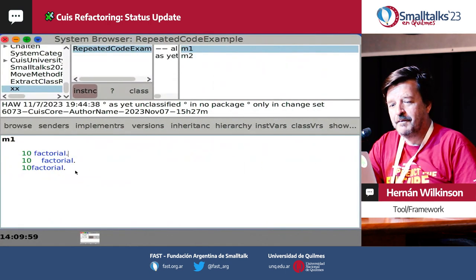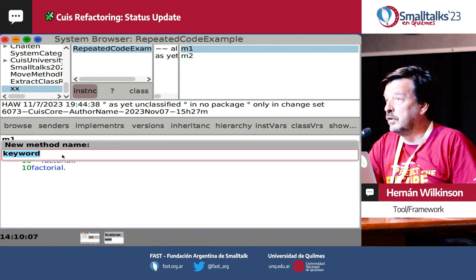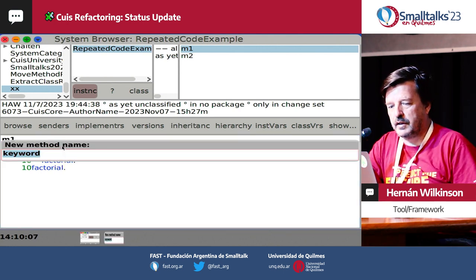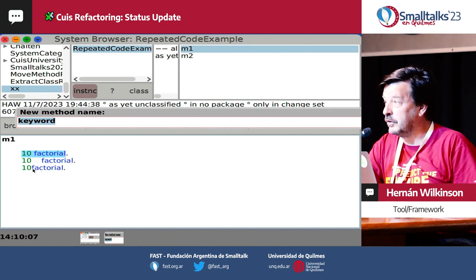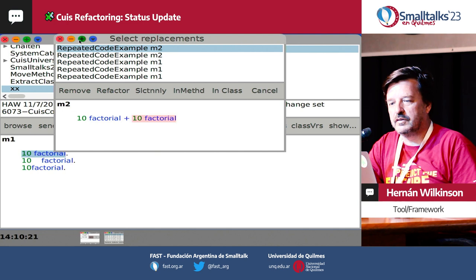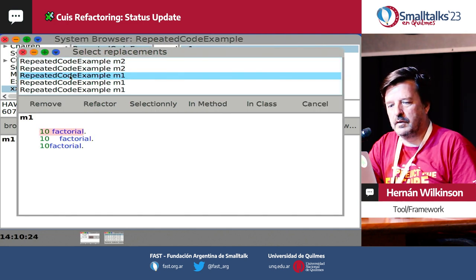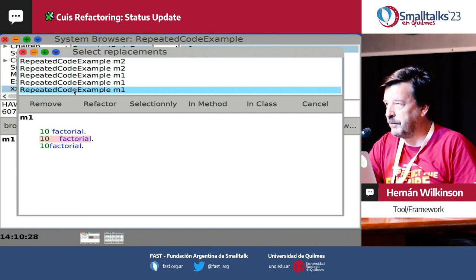Yesterday at the camp Smalltalk we did a lot of things and we managed to be able to find repeated code based on the AST, not only the strings. So for example, here I have '10 factorial', '10 space factorial', '10 space space factorial', '10 factorial' — I didn't know you could do that. And now if we want to do the extract method, it will show you all the places even though they're not exactly the same string. That's what we did yesterday.